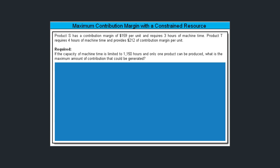Let's explore this contribution margin question. This is an incremental analysis approach dealing with a constrained resource. Product S has a contribution margin of $159 per unit and requires three hours of machine time, while Product T requires four hours of machine time and provides $212 of contribution margin per unit.